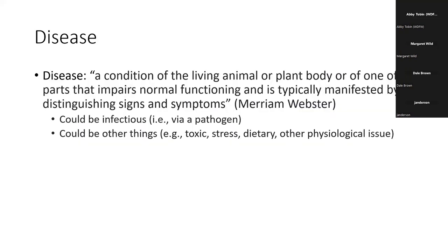Disease generally is a condition of a living animal or plant that has an impairment to its normal functioning. Those diseases we think about in plants and animals could be infectious, so coming from a pathogen, or they could be from other problems due to a toxin, some sort of environmental stress, dietary impacts, or other physiological challenges. Understanding whether a disease we observe in amphibians is pathogenic or from some other cause is pretty important for figuring out the cause and how we deal with these problems.